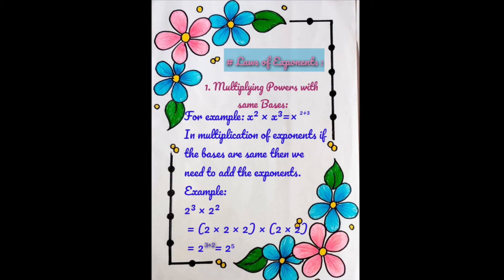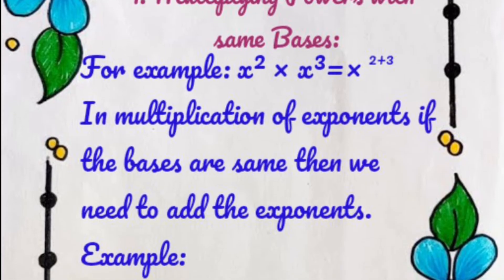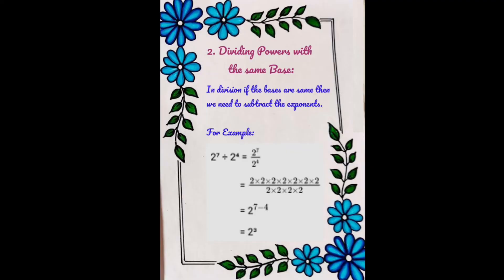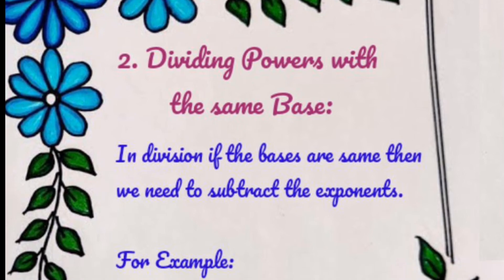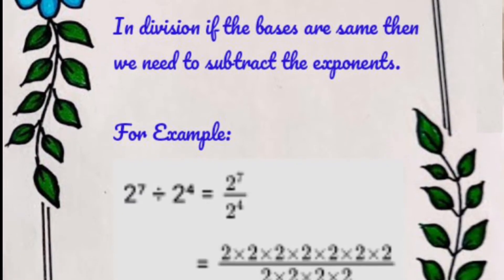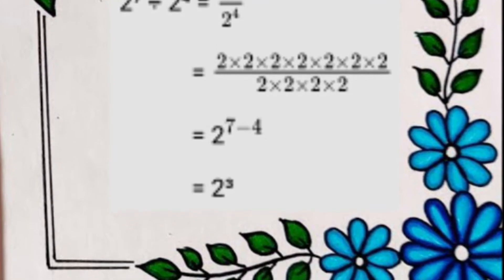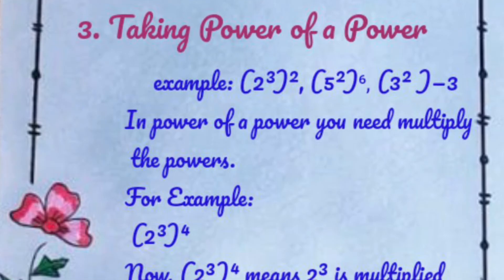Next one is laws of exponents. The first one is multiplying powers with the same base — its information and example. The second law is dividing powers with the same base — its information and an example, with a close look of the page. The next law is taking power of a power and its examples.